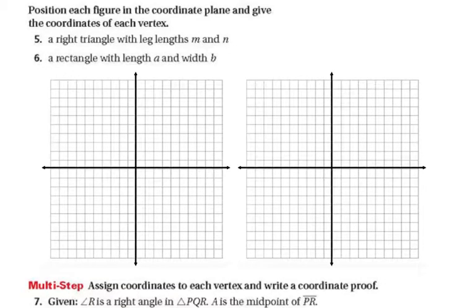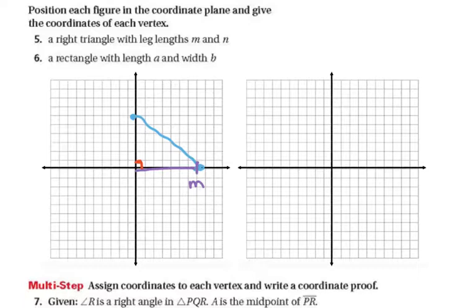The next one asks us to position each figure on the coordinate plane again. We have a right triangle with leg lengths of M and N. It doesn't matter how many grid dots we have, but we do need to place the right triangle at the origin. I'll indicate that this distance is M — we don't know the actual value — and the other is N. The coordinate up here is (0, N) and the other one is (M, 0), ignoring the actual squares.